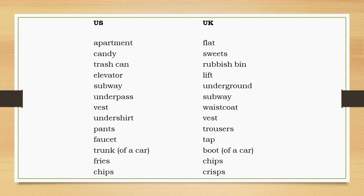Vest is another word that means different things on different sides of the Atlantic. A vest in America is a smart item of clothing which in Britain we would call a waistcoat, whereas what we call a vest in Britain is a kind of sleeveless undershirt. Pants in America are what we would call trousers in Britain, and what we call pants in Britain is what you'd wear underneath your trousers. A faucet is a tap in Britain, and Americans would put their luggage in the trunk of their car, whereas we would put our luggage in the boot. Fries in America are called chips in Britain, and chips in America are what British people would call crisps.